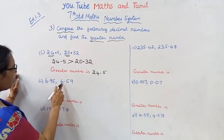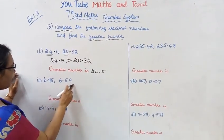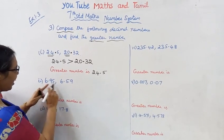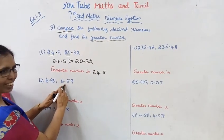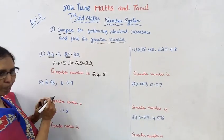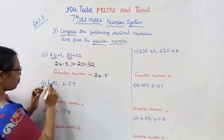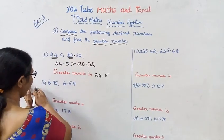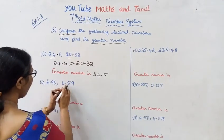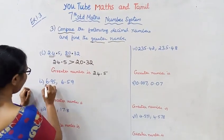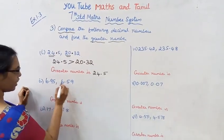Next problem: 6.95 and 6.59. Both have 6 before the decimal point, so first look at the left side of the decimal — both are 6. So we need to look further.